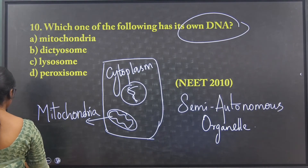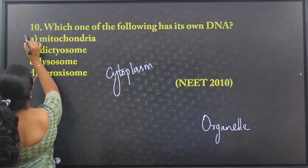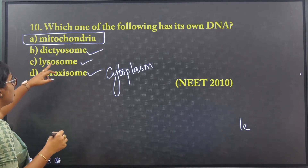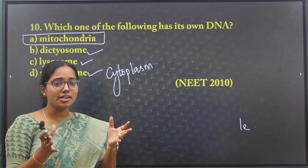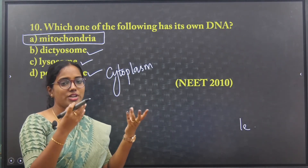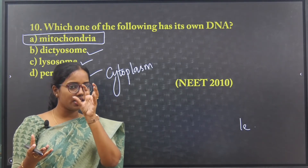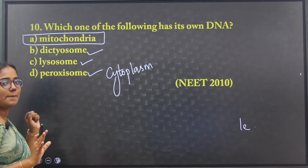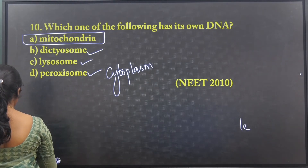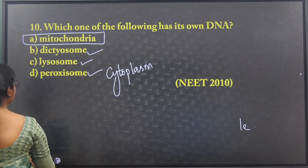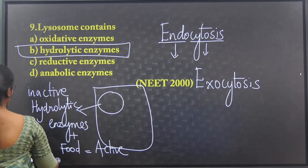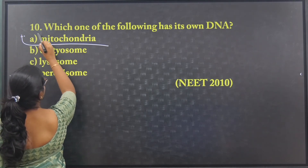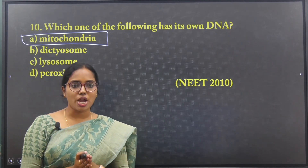So the answer is mitochondria. Dictiosomes are the Golgi apparatus present in plants. Lysosomes act as the cell's dustbin, digesting material entering the cell. Peroxisomes are also present in plant cells. The answer for the organelle with its own DNA is mitochondria. These 10 questions were from the chapter Cell: The Unit of Life.